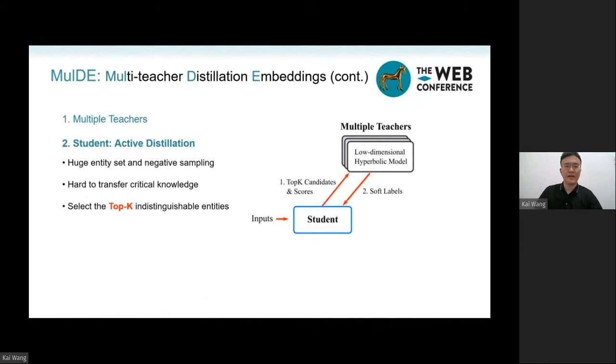The second component is the student part, another role in the knowledge distillation process. Conventional knowledge distillation methods measure the KL divergence between the classification probability of students and the soft label provided by teachers. But in the KGE model,